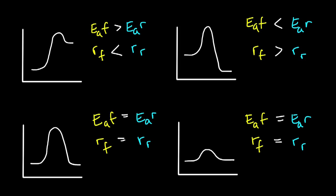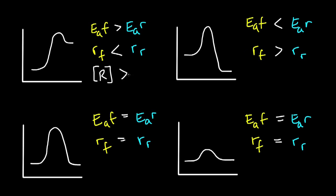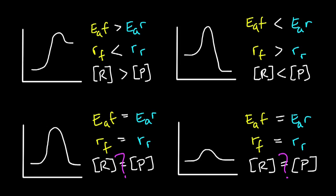Let's go back to our reaction coordinate diagrams for our four hypothetical reactions. We've already worked out the relative rates of the forward and reverse reactions in each case. Using these relative rates, see if you can predict the relative concentrations of the reactants and products at equilibrium. Pause the video. In the case where the forward rate is slower than the reverse rate, the concentration of reactants will be higher than the concentration of products. In the case where the forward rate is faster than the reverse rate, the concentration of products will be higher than the concentration of reactants. In the cases where the forward and reverse activation energies are the same, you'd be tempted to think the concentrations are equal, but that would only be true for a reaction like 1A → 1B. Since we don't know the reactions for these diagrams, we can't say for sure what the ratio of products to reactants will be.